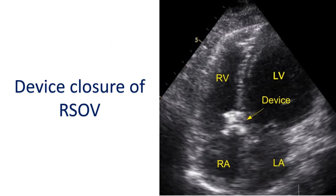Device closure of RSOV is another option being increasingly used in suitable cases. The distance from the aortic end of the RSOV to the coronary ostium is specifically measured to check whether the device will impede coronary flow. In a report of 25 cases, different devices were used and deployed using antegrade and retrograde approaches. A procedural success rate of 84% was achieved, including two patients who presented with cardiogenic shock. Two patients had residual leak and there was one case of device embolization. In one case, there was device-induced severe aortic regurgitation. Associated ventricular septal defect was closed simultaneously in one patient.